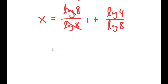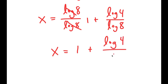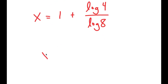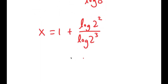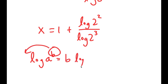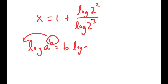Now these two cancel out to get 1. So I get x is equal to 1 plus log of 4 over log of 8. Now, log of 4 is the same thing as log of 2 squared, and log of 8 is the same thing as log of 2 to the power of 3. And if I have something in the form log of a to the power of b, I can move b to the front.